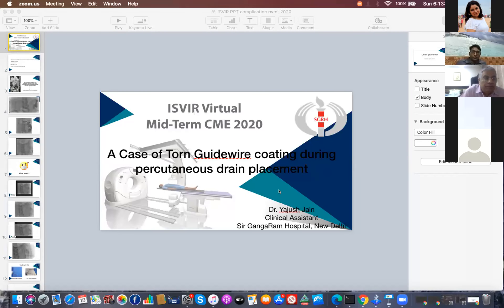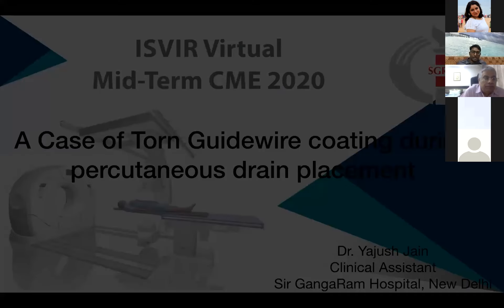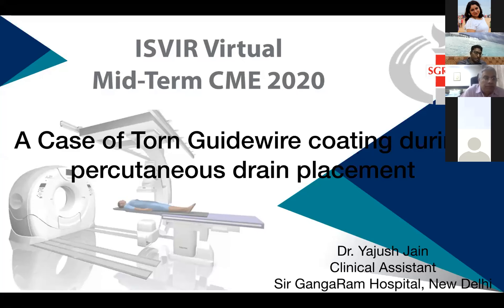Next case by Dr. Yajush Jain: a case of torn guide wire coating during percutaneous drain placement. Percutaneous drain placement is a common technique for liver abscess and pancreatitis. A case of acute necrotizing pancreatitis presented with severe abdominal pain, fever, and breathlessness with raised TLC, serum amylase, and lipase levels. CCT abdomen showed a large peripancreatic collection extending into the left perirenal space.